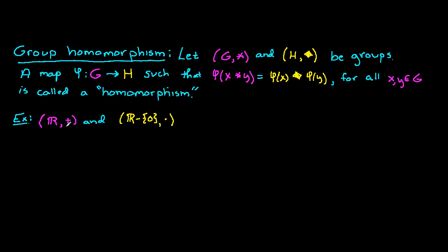The binary operation on the first group is addition. The binary operation on the second group is multiplication. Let's consider the map φ: ℝ → ℝ\{0} by the following definition: φ(x) = e^x.